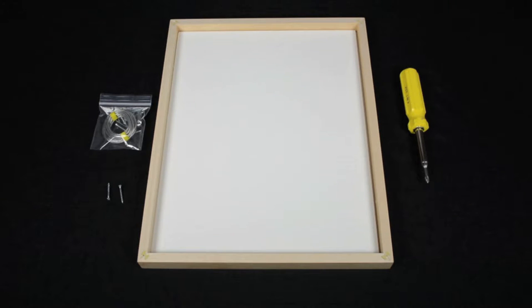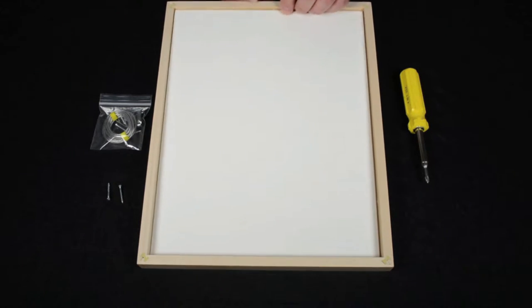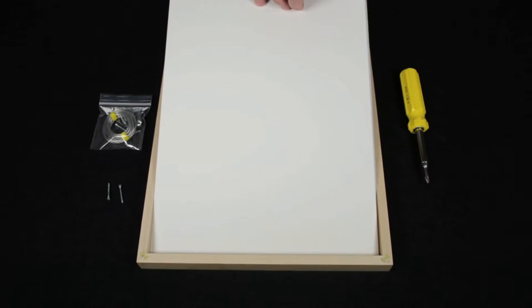With the stringer placed aside for a moment, it is easy to remove the UV filtering glazing and acid-free backing board.